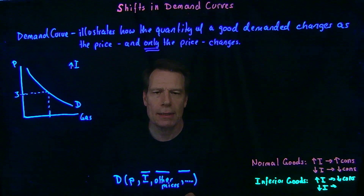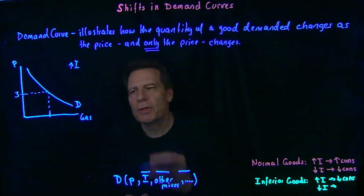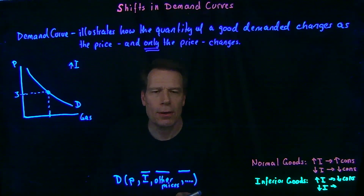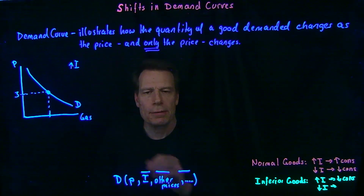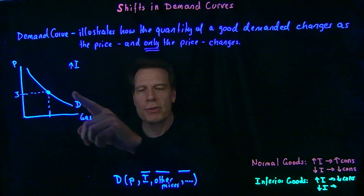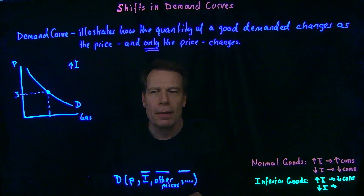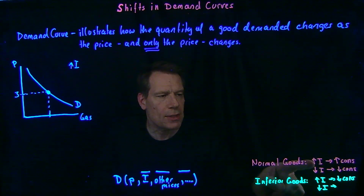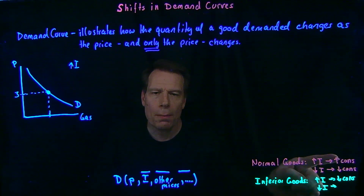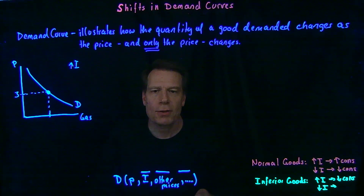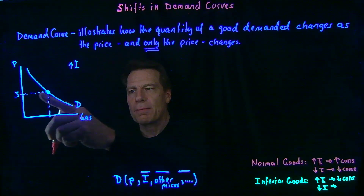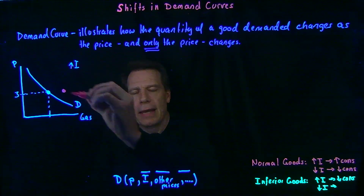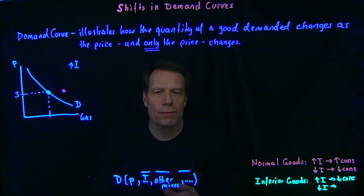Then you experience an increase in income. The price isn't changing, so we stay at the same horizontal level. But when income increases, the quantity we demand might change. If gasoline is a normal good, an increase in income will cause us to consume more gasoline. So at that same $3 price, you'll now buy more gasoline — that point will shift to the right.